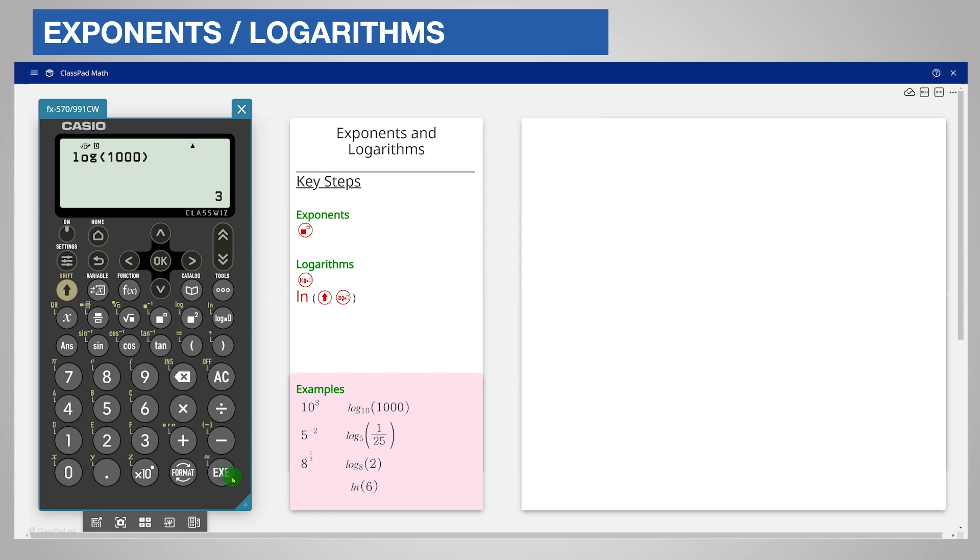You can enter fractions in the base or in the value. For example, to find log to the base 5 of 1/25th, press the log base key, enter the base 5, scroll right and enter the fraction. Enter the numerator and then the denominator. The log is negative 2 as we saw earlier from the exponent.